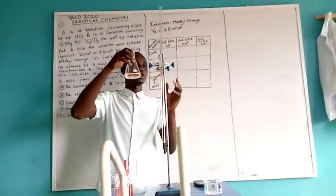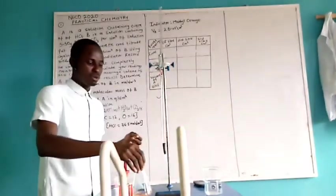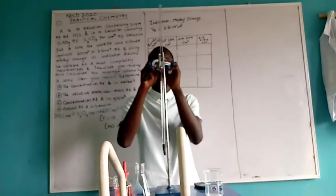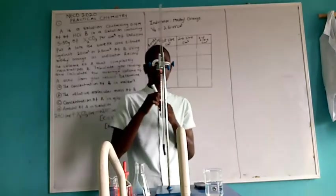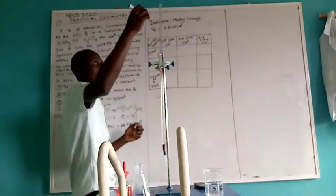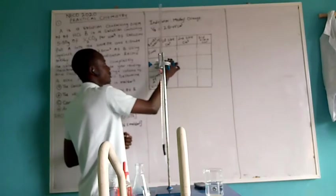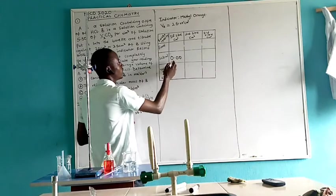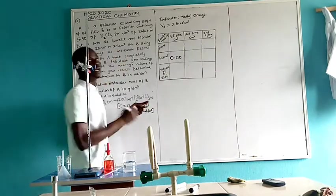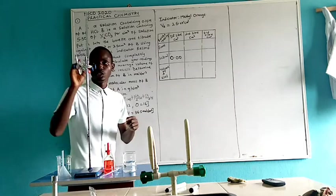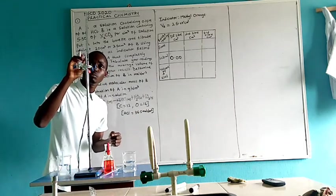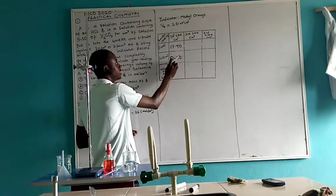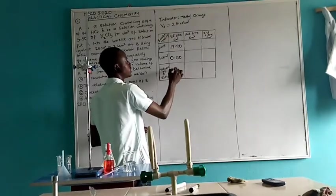The color has changed. There is a color change now. The end point is reached. Measure the volume of acid used. Considering the lower meniscus, I have 17.90. My initial volume of acid when I started was 0.00. After the first titration, the final is 17.90. Subtracting the initial from the final, I have 17.90.